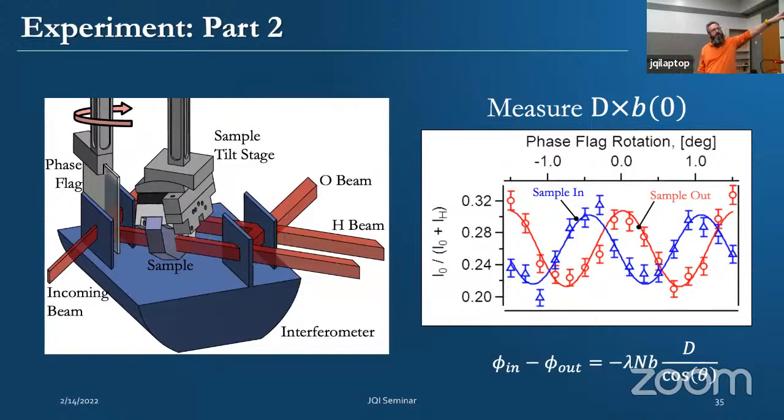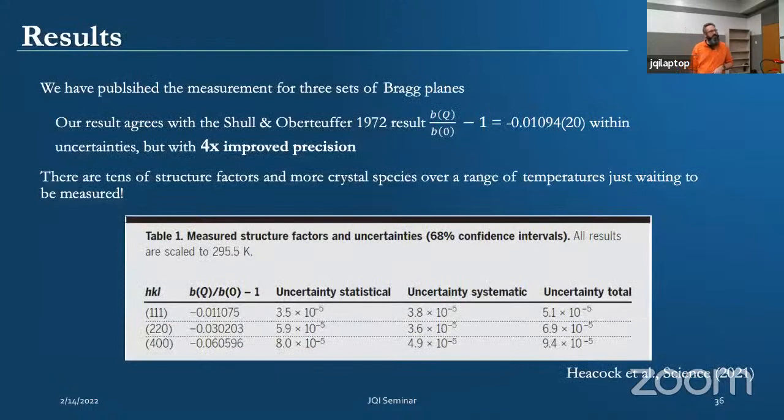To factor out the nuclear scattering and the thickness of the sample, we did a typical neutron interferometer experiment where we inverted the sample and measured its effective phase shift. This is a plot of some of the data there. That gives us the normalization factor.